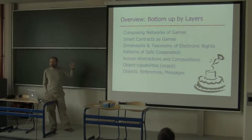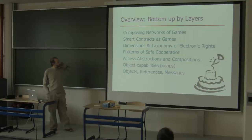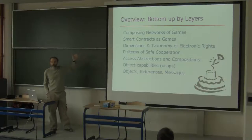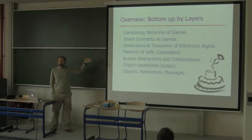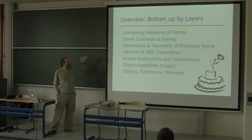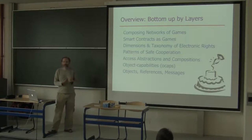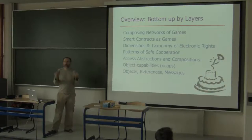Then patterns of safe cooperation — I'll go through the money example from yesterday, explaining how it works. With money and object references as examples, I'll be teasing apart the dimensions by which kinds of electronic rights differ, giving hints of a taxonomy of kinds of electronic rights. Once you have a logic of multiple kinds of electronic rights and multiple means to transfer rights, you can use that to build up to the expression of smart contracts.